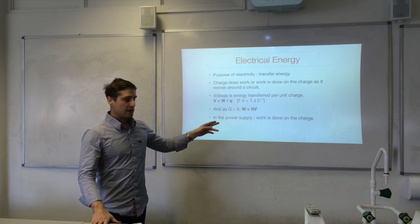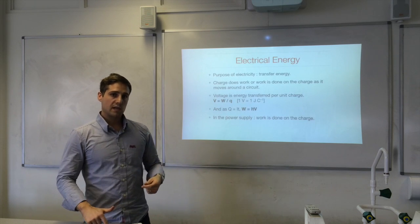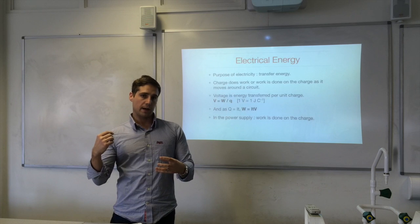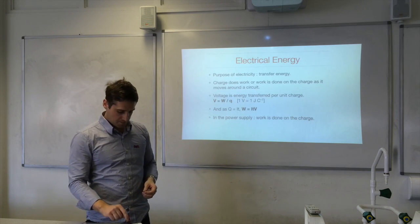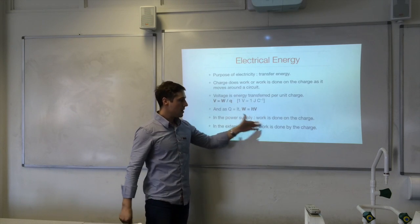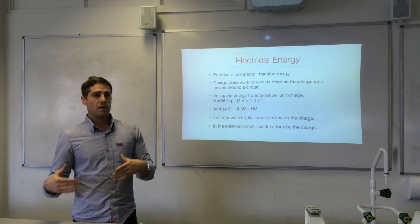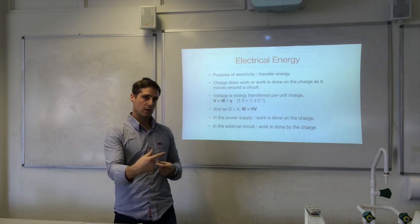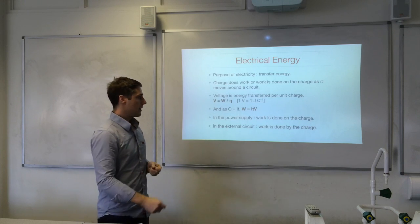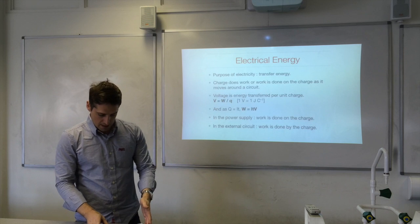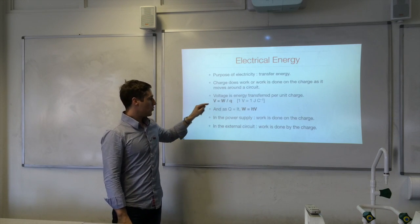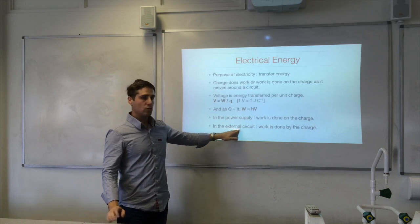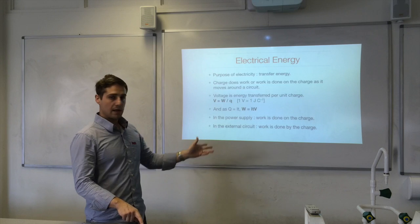Since Q equals I times T, we can substitute in and get: electrical energy transferred W equals I times T times V. So with an ammeter, voltmeter, and stopwatch you can determine how much energy was transferred. In the power supply, work is done on the charge — transferring chemical energy into electrical energy (for cells). In the external circuit, work is done by the charge, such as electrical energy to heat through a resistor. The voltage in the power supply is called the EMF (electromotive force), and the voltage drop is called the potential drop.